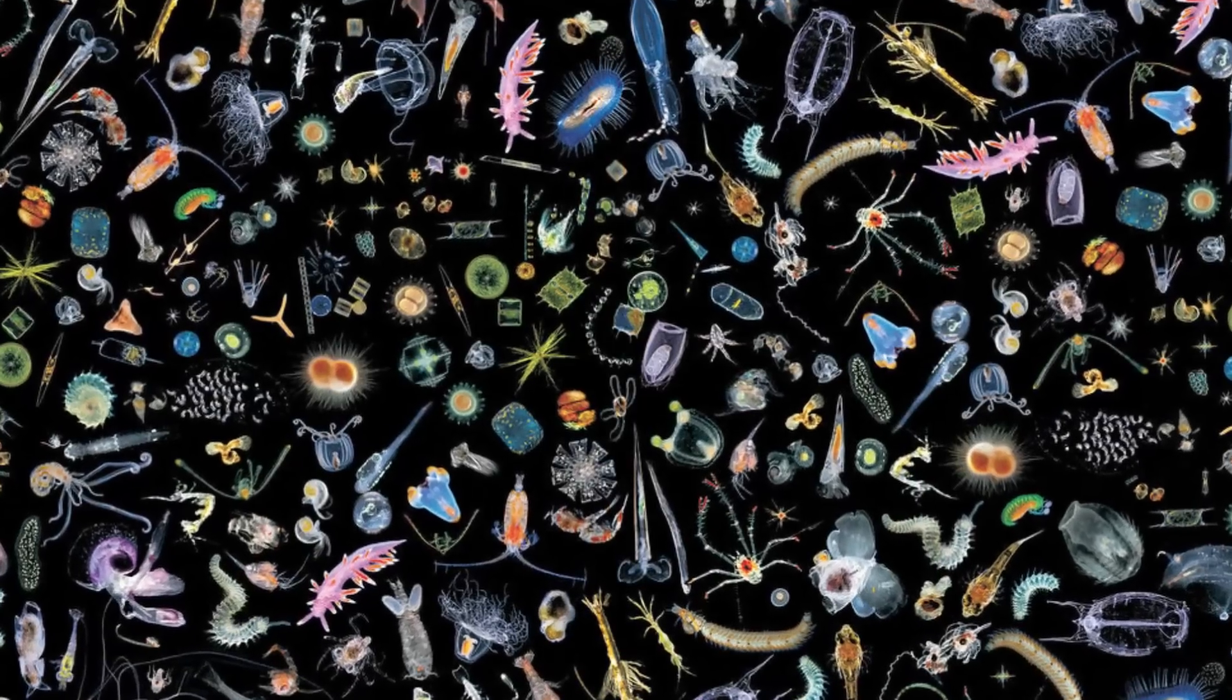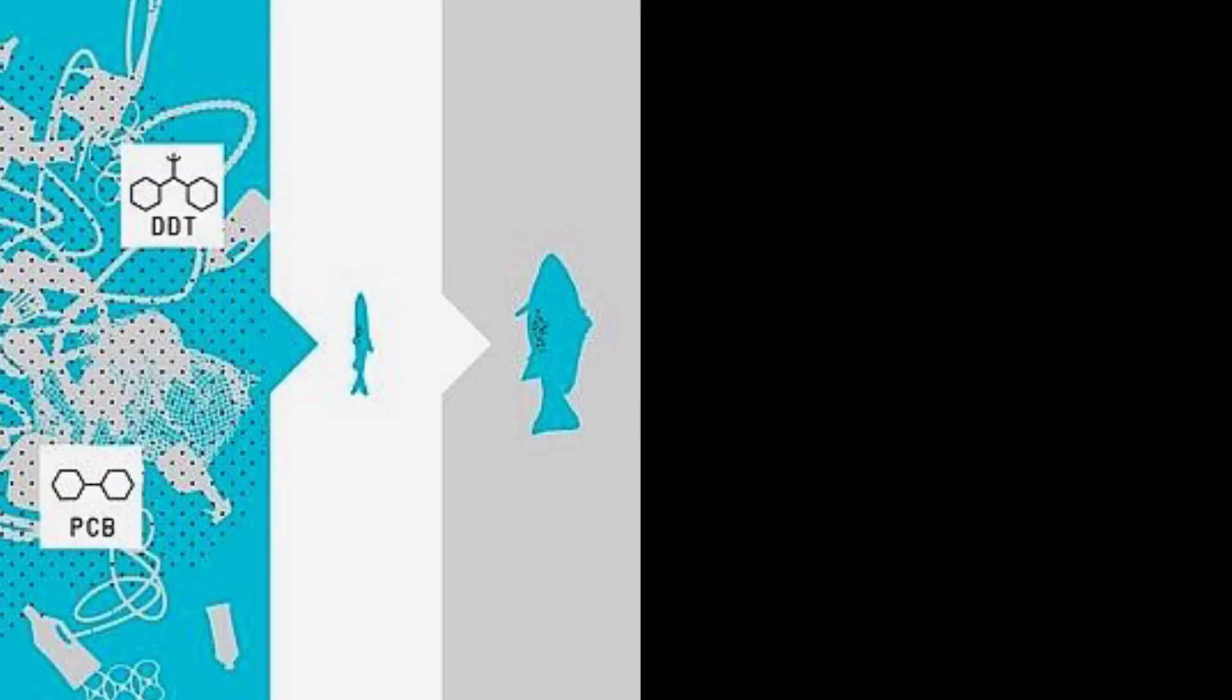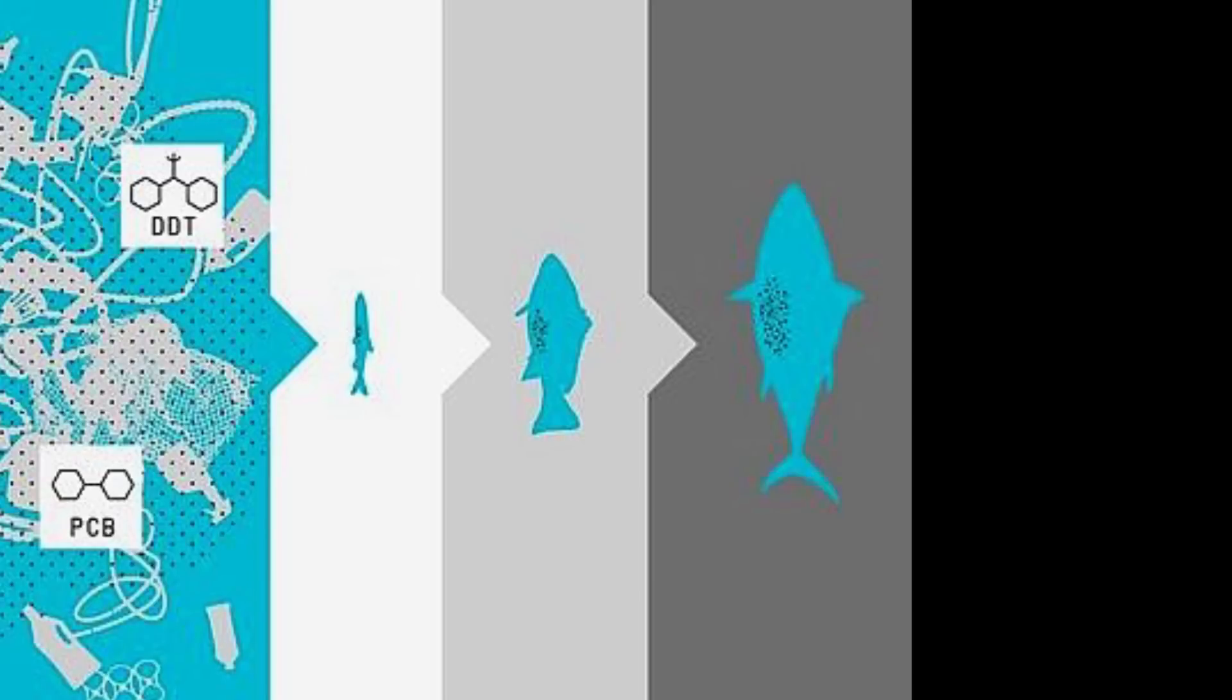This is plankton. Just look at it, so tiny and cute and stuff. Plankton is eaten by small fish. These small fishes are eaten by bigger fishes, which are then eaten by even bigger fishes, or us.